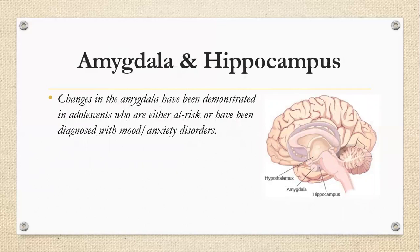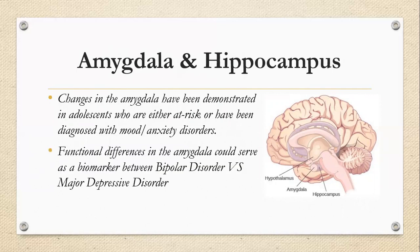The amygdala is well related to mood and anxiety. Changes in the amygdala have been demonstrated in adolescents who are either at risk or have been diagnosed with mood and anxiety disorders. We also see that functional differences in the amygdala could serve as a biomarker between bipolar disorder versus major depressive disorder — so using an fMRI, we can actually find support to differentiate between those two conditions.